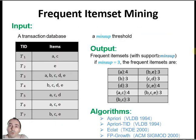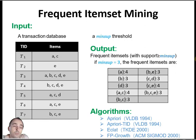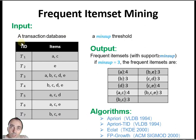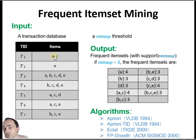Many of you may know about frequent item set mining — it is a famous problem in data mining. The input is a transaction database. For example, it can be about shopping: we have the transactions made by some customers in a shopping mall, what they have bought.